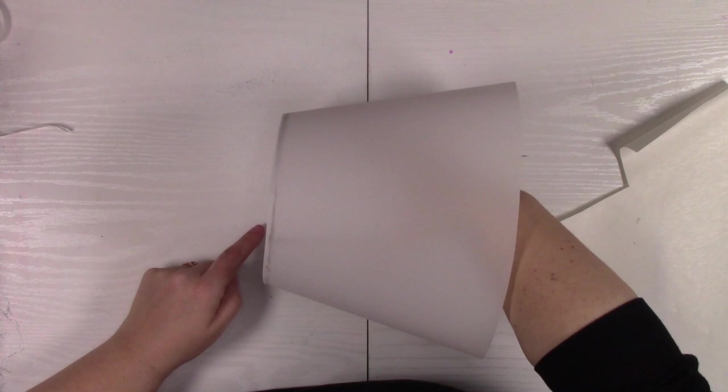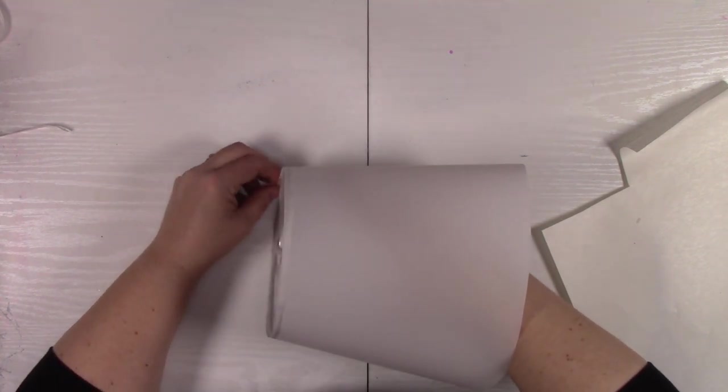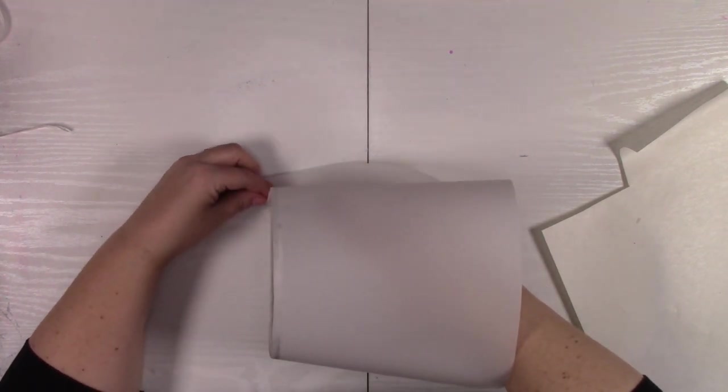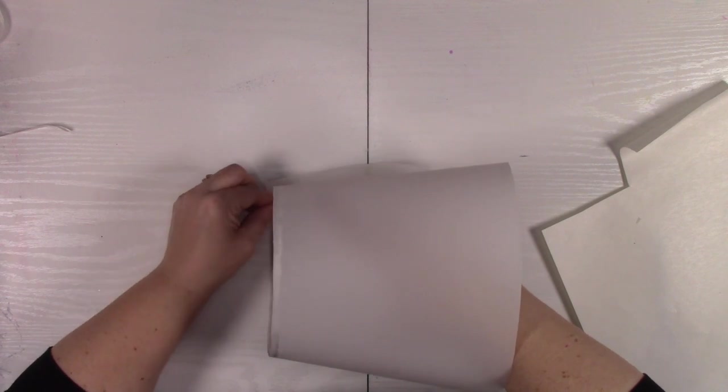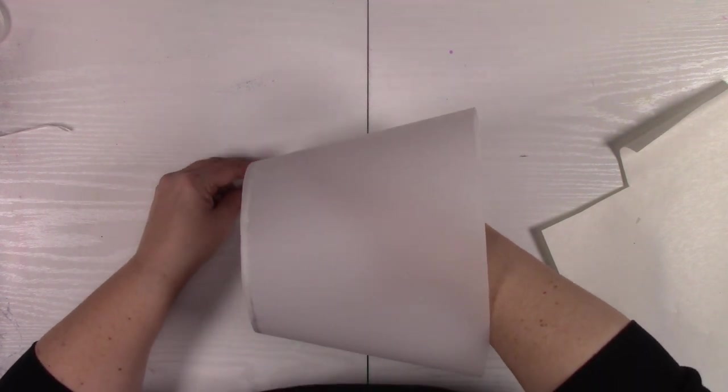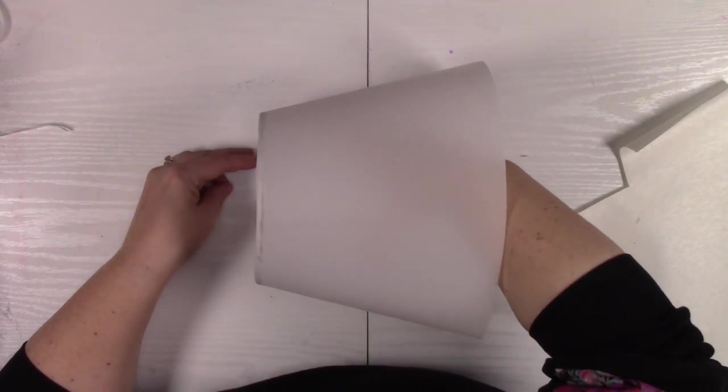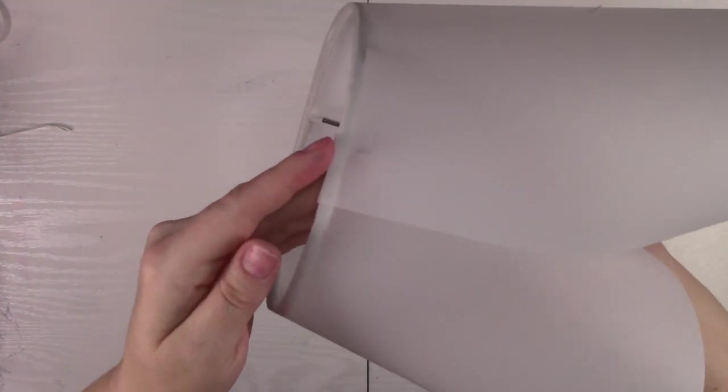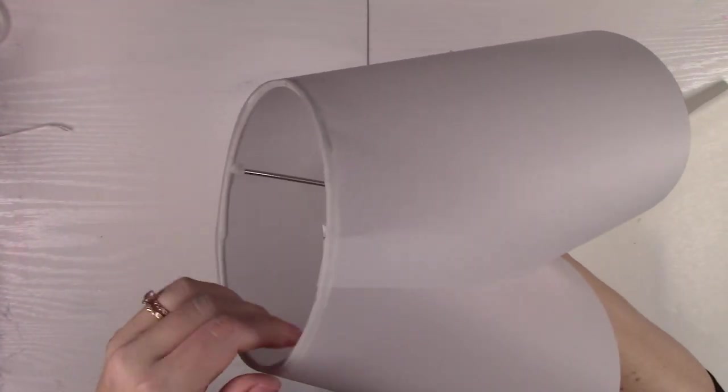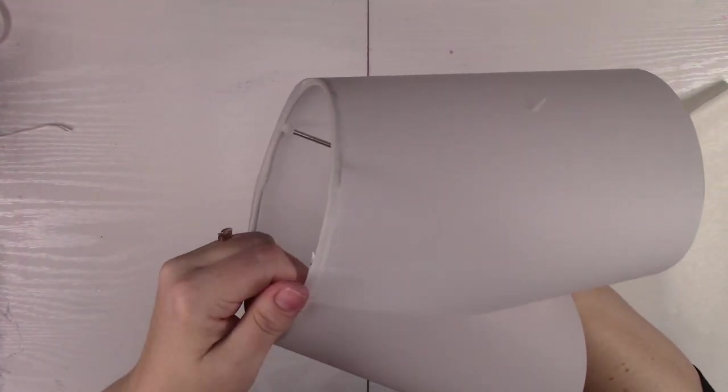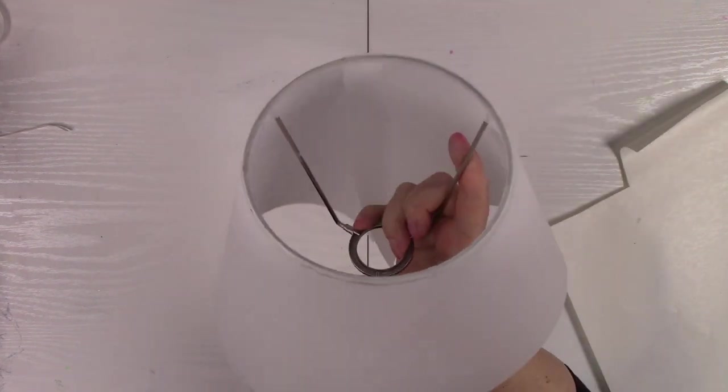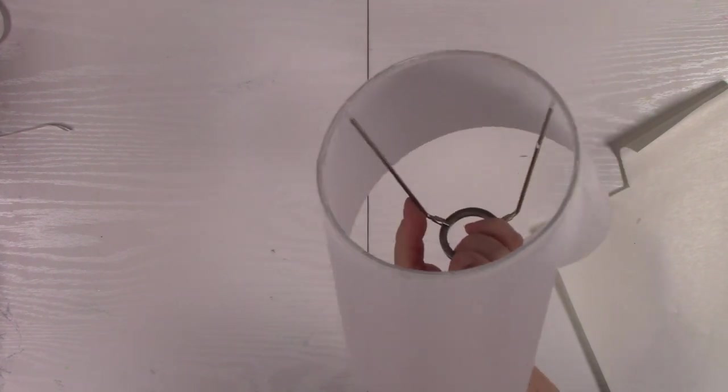So now if I bring this up close, you'll be able to see where I've put that strip right along the edge. Okay. So next we're going to bring in the top part of our frame for the lampshade. And then I'm just going to start at one end and peel. And I'm just going to kind of peel as I go because I don't want it sticking to itself and causing more problems.